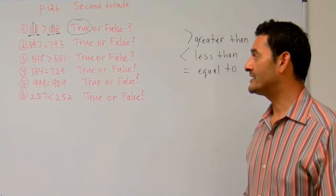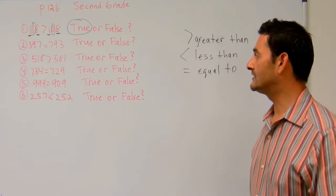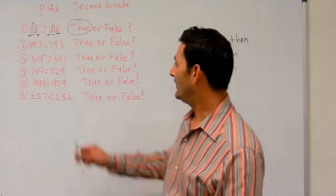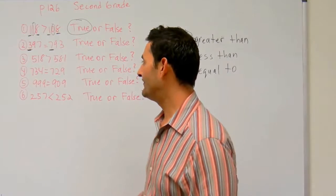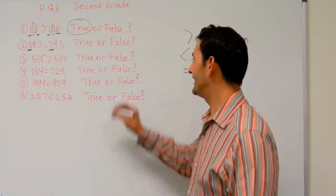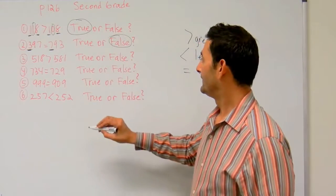Number two we have 397 is equal to 793. Well, here in the hundreds place we have a three. Here in the hundreds place we have a seven. That's not equal to each other. That's going to be false.